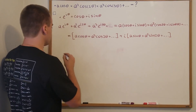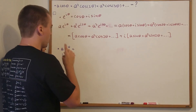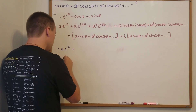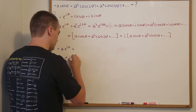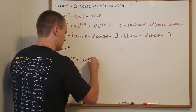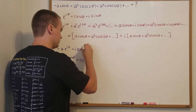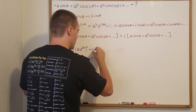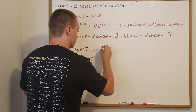Let's rewrite the series. We're going to get A·e^(iθ) plus A²·e^(i2θ) and so on. I can see that the n-th term, A^n·e^(inθ), equals (A·e^(iθ))^n. So my second term is (A·e^(iθ))² and my third term is (A·e^(iθ))³, and so on.